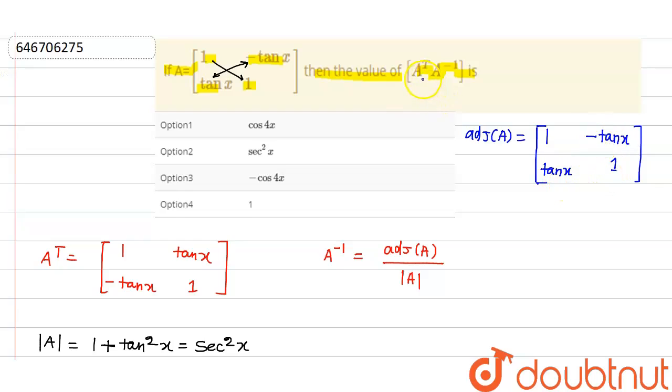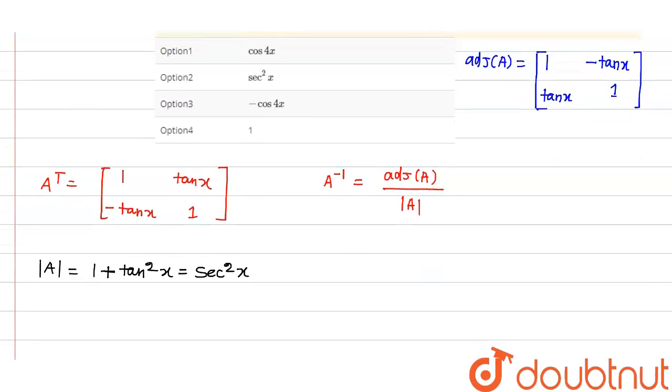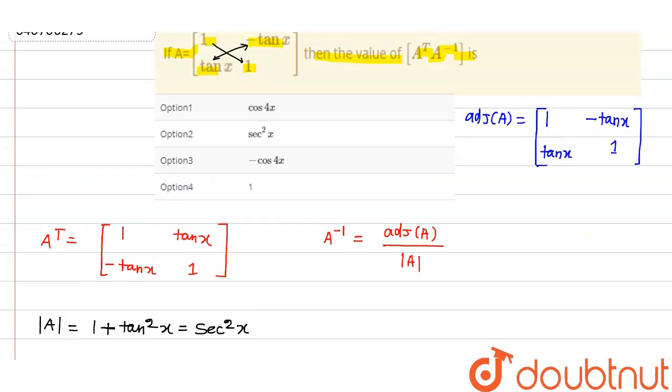Then we need to find what? A transpose into A inverse. So it is what? Sorry, we need to also find what? This thing is what? Adjoint of A.